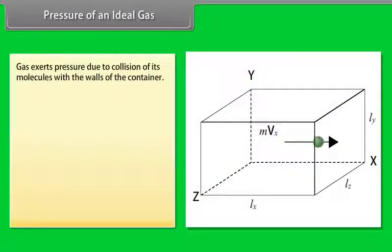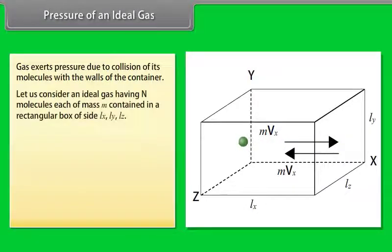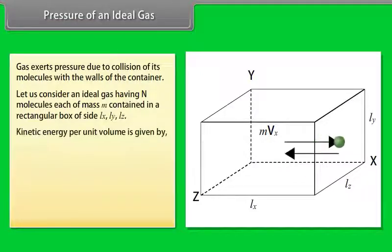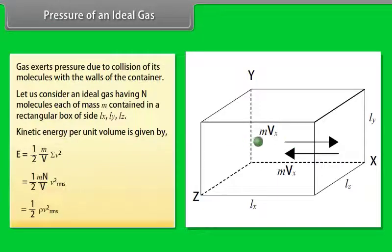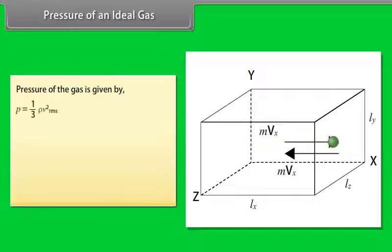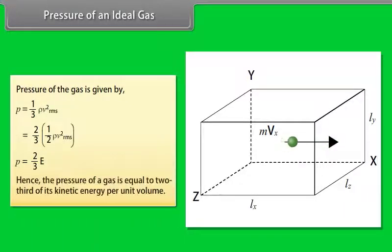Gas exerts pressure due to collision of its molecules with the walls of the container. Let us consider an ideal gas having N molecules each of mass M contained in a rectangular box of side LX, LY, LZ. Kinetic energy per unit volume is given by E is equal to half rho Vrms square. Pressure of the gas is given by E is equal to 2 by 3 of E. Hence the pressure of a gas is equal to two third of its kinetic energy per unit volume.